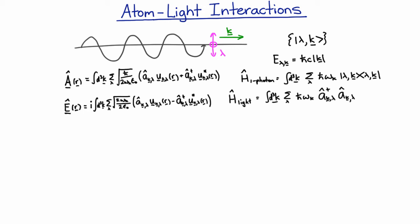If neutral atoms were simply neutral objects, then they wouldn't interact with electromagnetic field at all. So the dominant interaction between atoms and light comes from the fact that they're actually made of components that are charged.